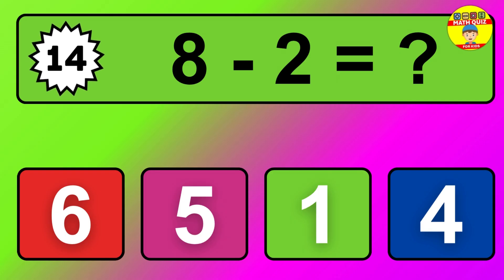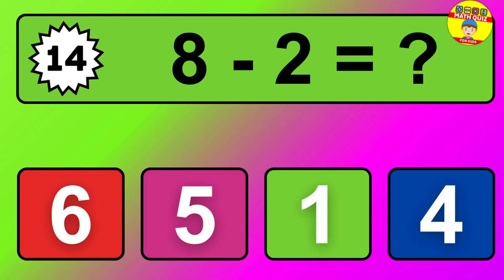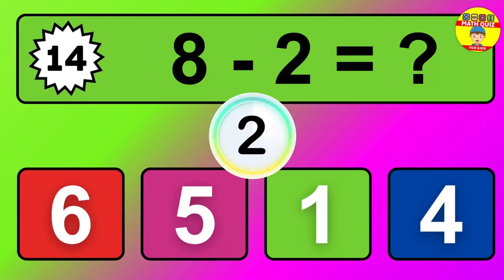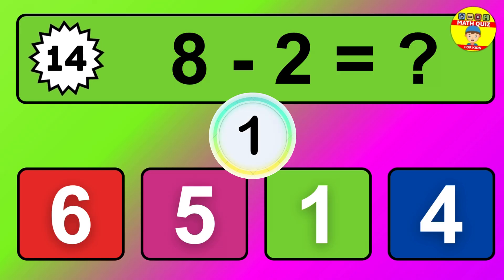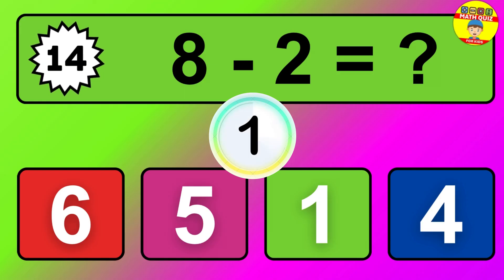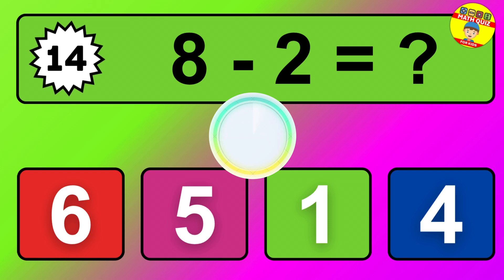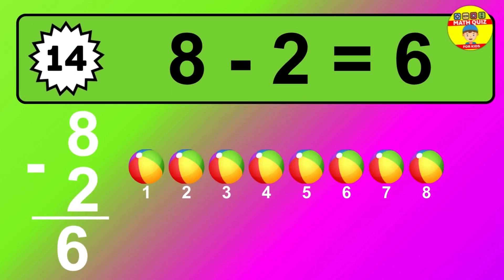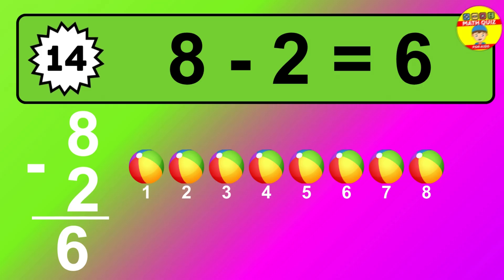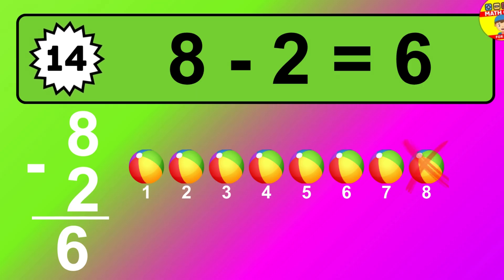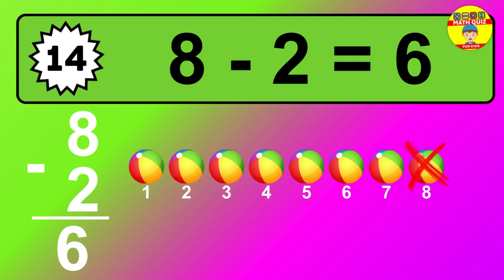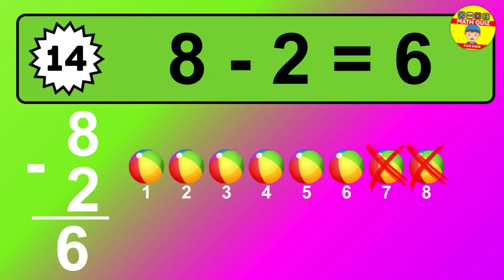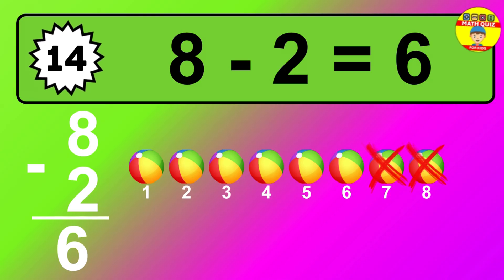Question 14. 8 minus 2 equals what? The answer is 8 minus 2 is 6. Let's count it: 1, 2, 3, 4, 5, 6.